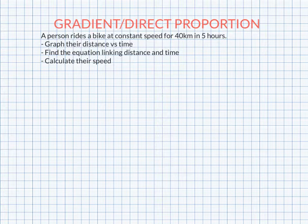A person rides a bike at a constant speed for 40 kilometers in 5 hours. We're going to graph their distance versus time, find an equation linking distance and time, and calculate their speed. So firstly, let's look at the graph.